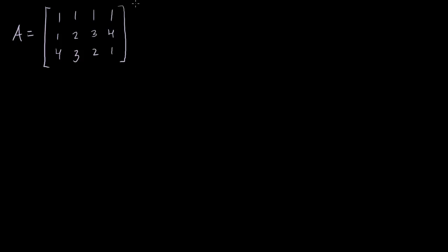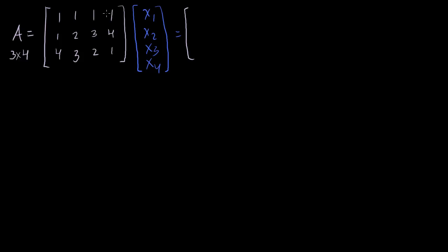A null space is literally just the set of all vectors such that when I multiply A times any of those vectors, I get the zero vector. So if the vector (x1, x2, x3, x4) is a member of our null space, then A times that vector equals zero. This is a 3×4 matrix, so the vector x must be a member of R4, and the result will be the zero vector in R3.